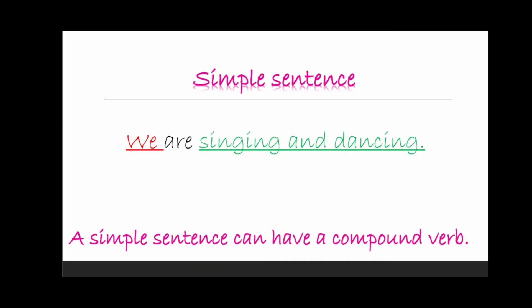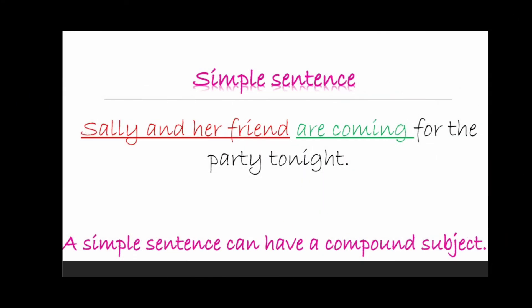If we are having more than one verb in a sentence, we call it simple again. Like we are singing and dancing. Here we have singing and dancing as two verbs but still it is a simple sentence. Now if we have more than one subject in a sentence, that is we have compound subject, then it is also a simple sentence like Sally and her friend are coming for the party. Now here Sally and her friend is a subject and it is having compound subject. So whether we have compound subject or compound verb we are gonna have simple sentence.